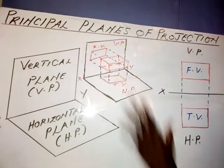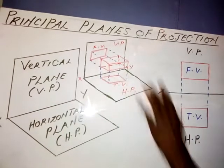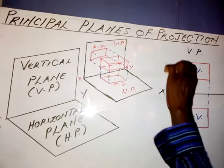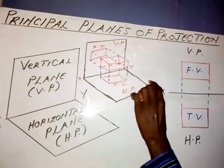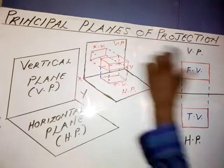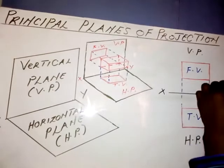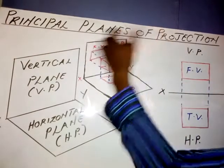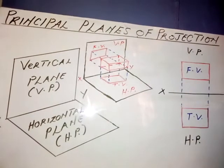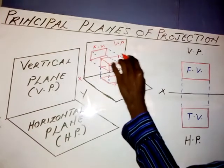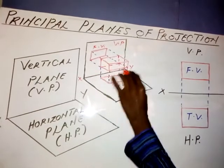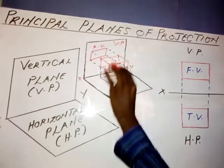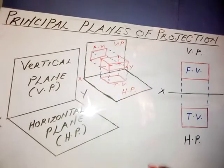Now let's come to this diagram. As I've explained, if we want to produce the orthographic views of an object, we need to make use of these two planes. Looking at this object that we have here, this is a cuboid that is placed in between these two planes.